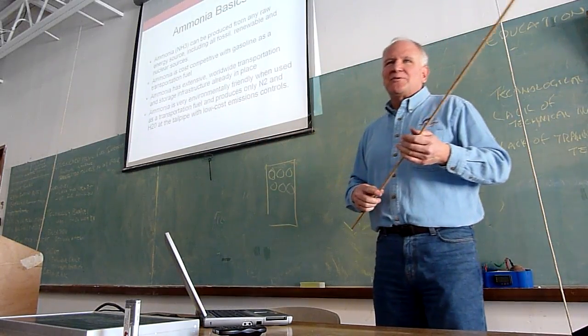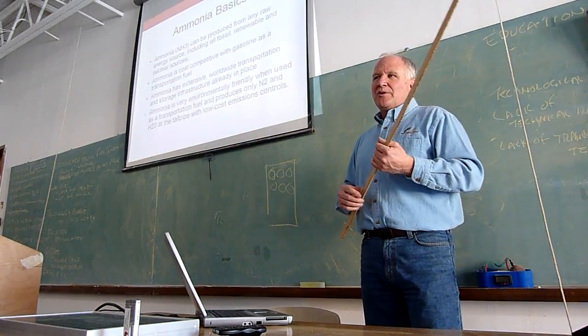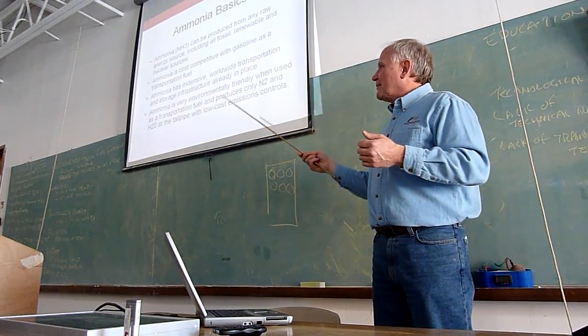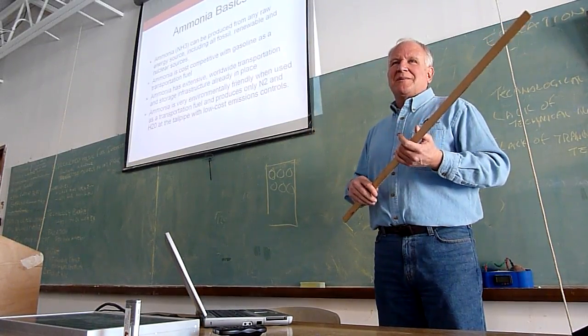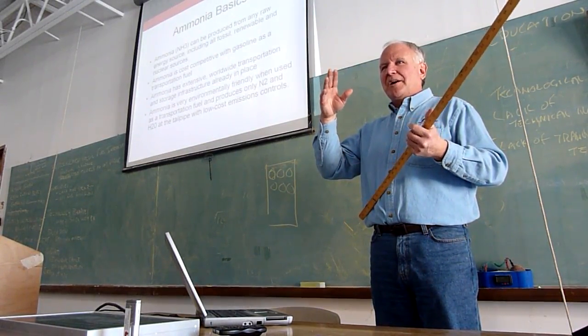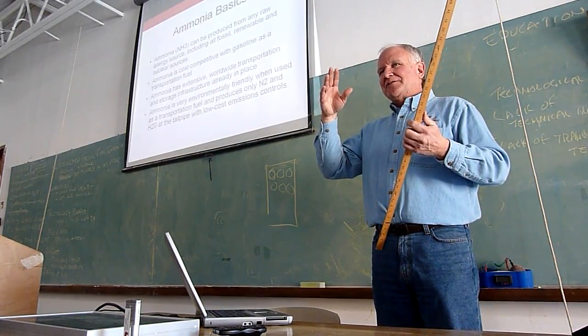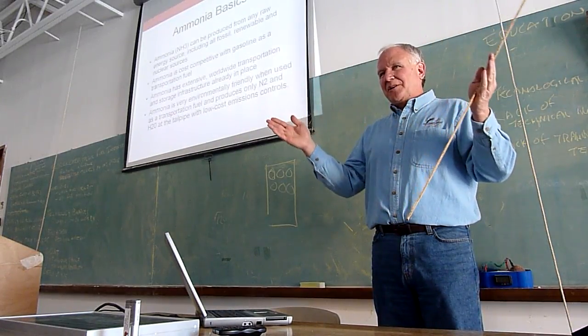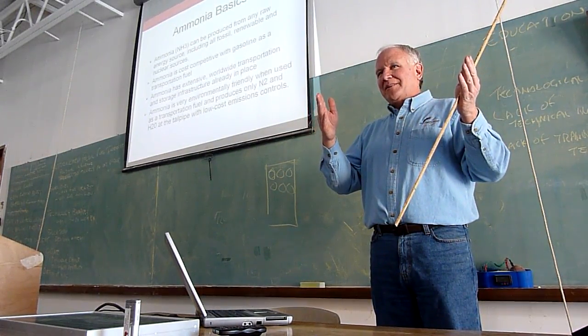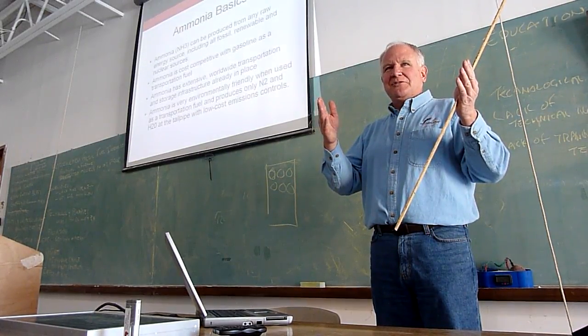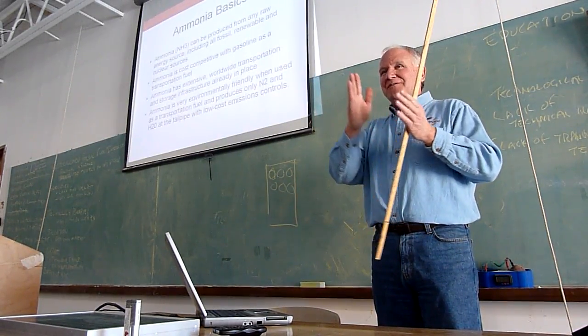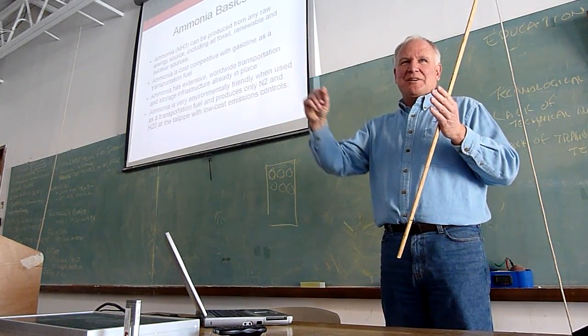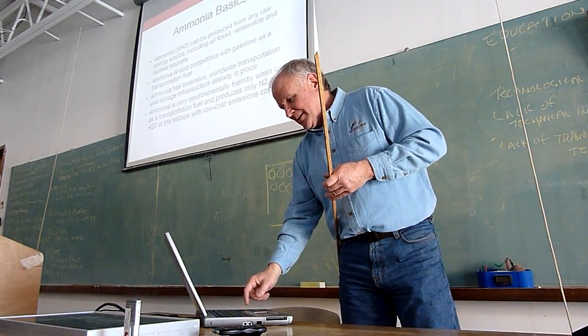Ammonia is very environmentally friendly when used as a transportation fuel. You only produce two things, nitrogen, N2, and H2O. You do produce some NOx, nitrous oxides. But the way we eliminate NOx in tailpipes and from diesel engines and from coal plants is we inject a little ammonia over a catalyst to react with the NOx and it forms into an H2O. So your fuel also is your environmental abatement product. You come out cleaner than hydrogen. If you just had a hydrogen engine, you'd produce some NOx and you'd have to add some ammonia in the tailpipe to get rid of the NOx. Okay, so it's cleaner than hydrogen. That's hard to believe. But true.